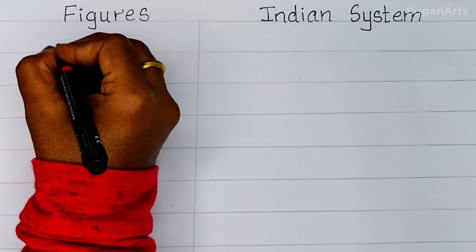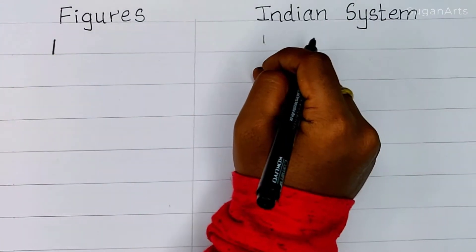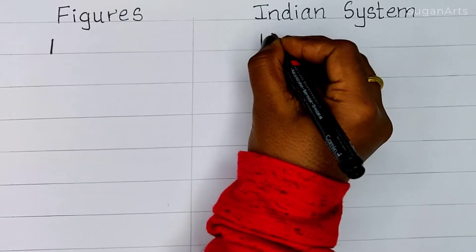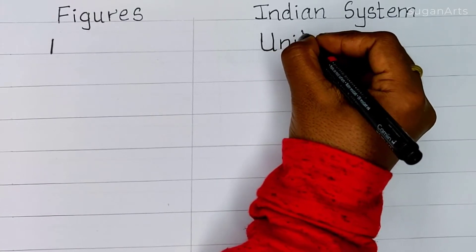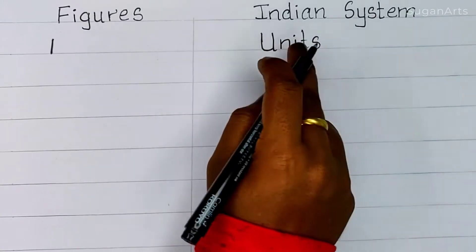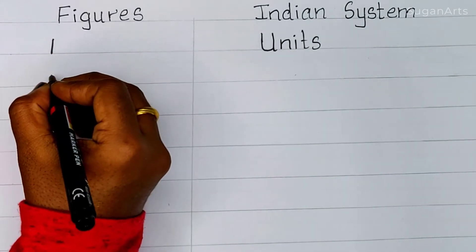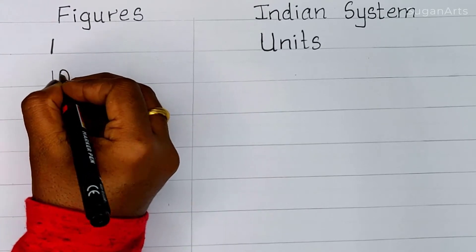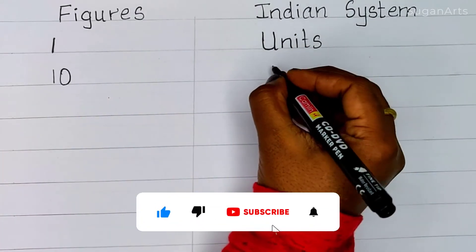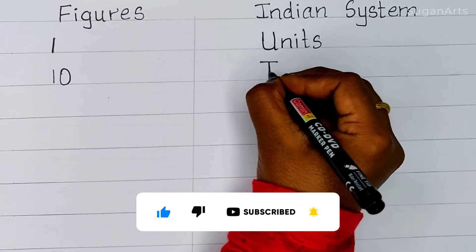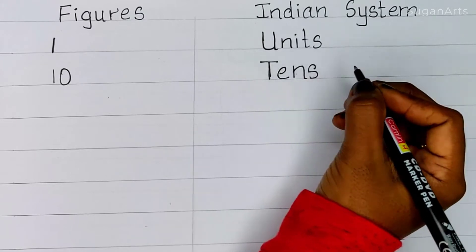In figures we write as 1. So 1, we call it as Units. Next, 1 0 — so if we already know this is 10. In the number system we call it as Tens.